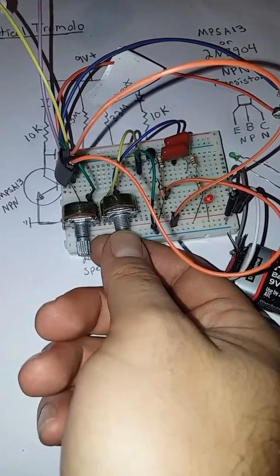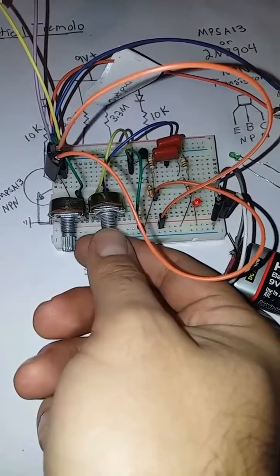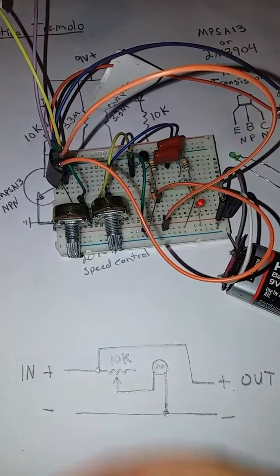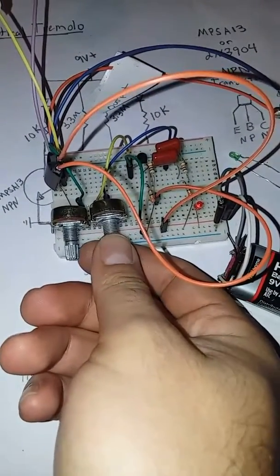We can also use our speed control on our flashing light to change the speed of the tremolo.